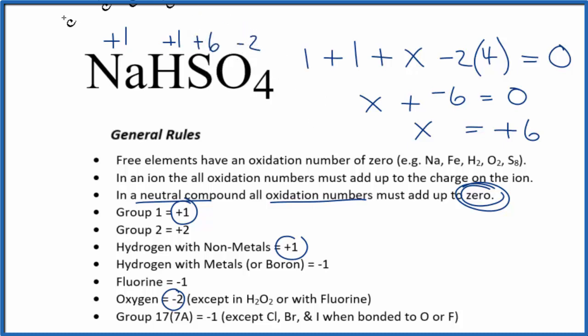So if you add all these numbers up, four times minus two, plus six, plus one, plus one, you'll end up with zero, since NaHSO4 is a neutral compound.